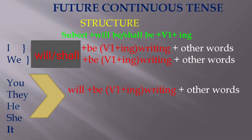Let us see the structure of the future continuous tense: subject plus 'will be' or 'shall be' plus V1 in the '-ing' form. Here V1 means the present verb. For the first person singular and plural we use 'shall be', though we can also use 'will be'.